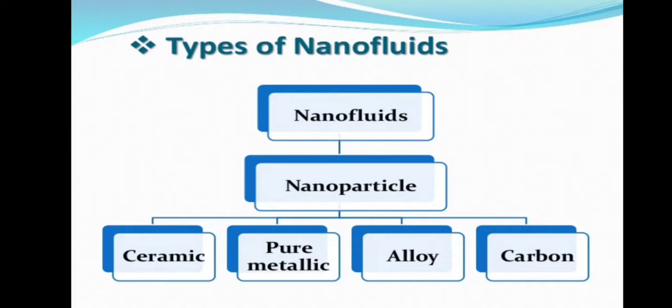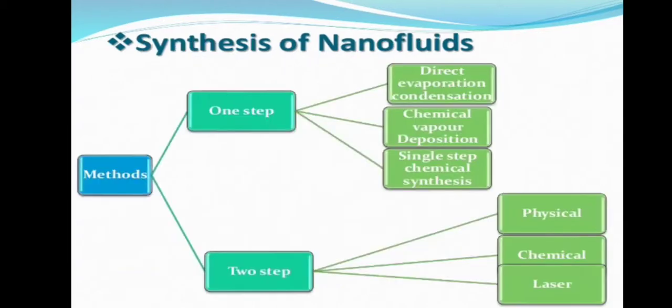In terms of types, we have nanoparticles based as ceramic, pure metallic, alloy, and carbon. While synthesizing these nanofluids, we use two methods: one is one-step method and the other one is two-step method. While making the application of one-step method, we have direct evaporation condensation, then we have chemical vapor deposition, then we have single-step chemical synthesis. In two-step method, we use physical, chemical, and laser technologies.